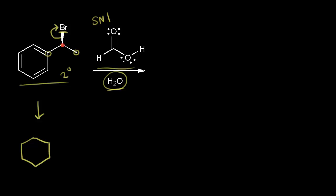Let's draw our carbocation. We put in this ring with our pi electrons and highlight our carbon in red, which gets a plus one formal charge. This is a secondary carbocation, but it's also a benzylic carbocation, which makes it even more stable than we would normally expect — the pi electrons in the ring provide additional resonance structures to stabilize the positive charge. So we have a secondary benzylic carbocation as our electrophile.